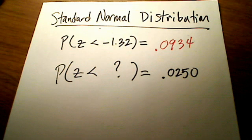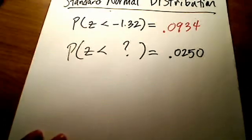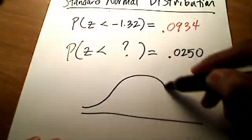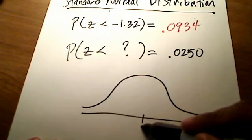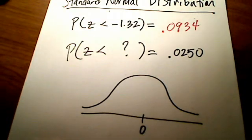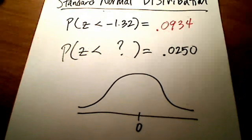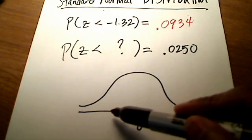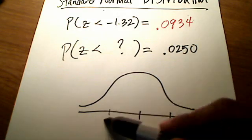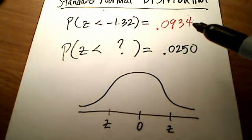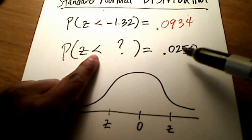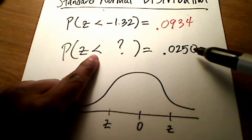Picture-wise, really think about the entire picture going on here, because that will hopefully make things clear. This is a standard normal curve. I am trying to look for a z-score — either over here or over here — that if I shade to the left of it, it's going to give me an area of .0250.